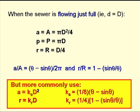When the sewer is flowing just full, so that the depth of flow equals the sewer diameter, d equals D, then little a equals big A equals πD²/4, p equals big P equals πD, so that the hydraulic radius at full bore, big R, is D/4.